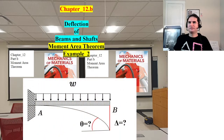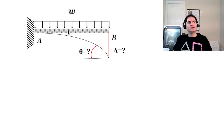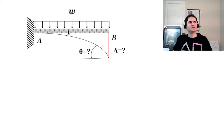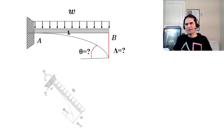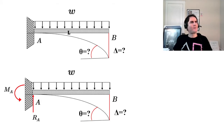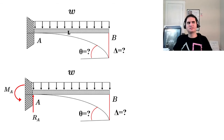Chapter 12: Deflection of Beams and Shafts, Part B - Moment Area Method, Example 2. We'll calculate the maximum deflection of a cantilever beam handling a uniformly distributed load W - that's delta at the free end - and also theta at B. We can find deflection and theta using different approaches.